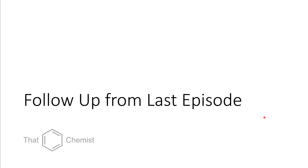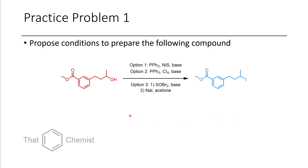Before we get into that, let's look at some of the practice problems I assigned last lecture. First I asked you to demonstrate synthesis of this iodide from this alcohol. Your first two options would be to do an Appel reaction — you could use triphenylphosphine and either N-iodosuccinimide, or alternatively carbon tetraiodide.